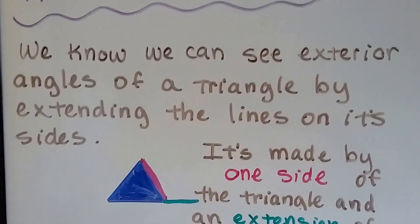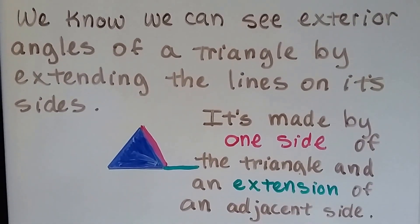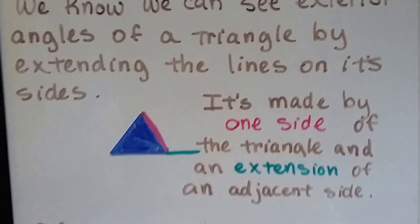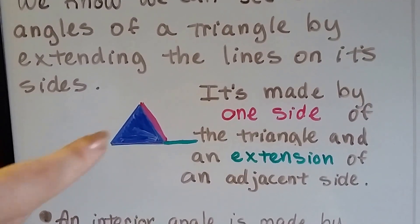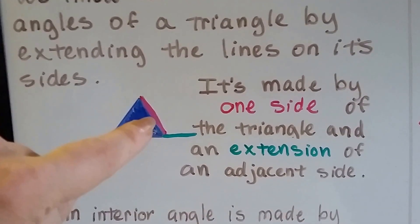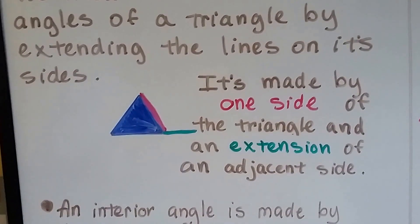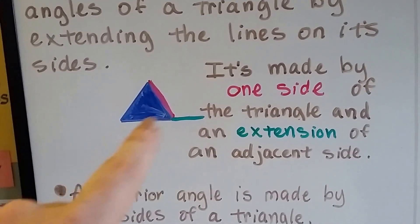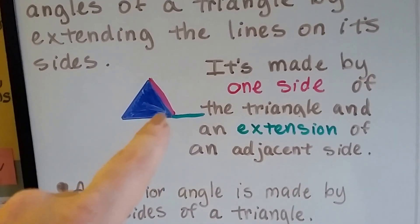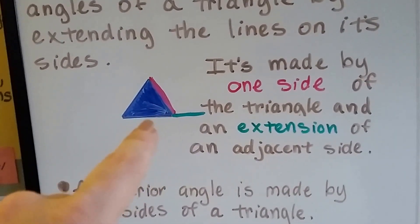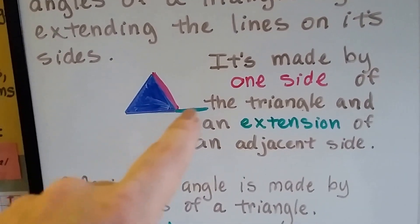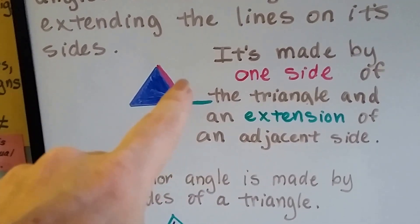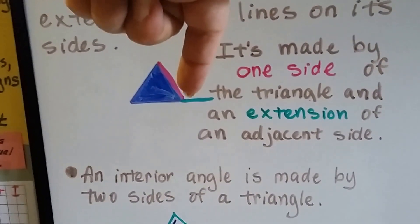We can see exterior angles of a triangle by extending the lines of its sides. It's made by one side — see this pink one side of the triangle — and an extension of an adjacent side, a side that's next to it. Adjacent means next to. So this side is next to this side, and by extending this one, we make this right here inside of here. That's the exterior angle.